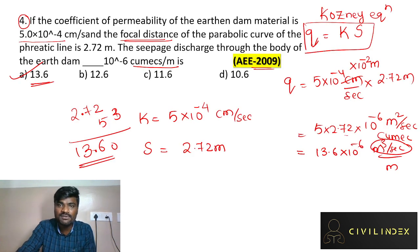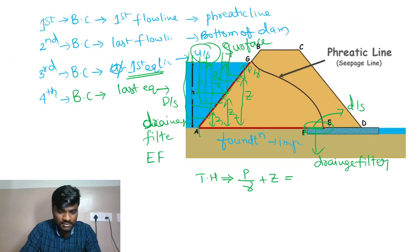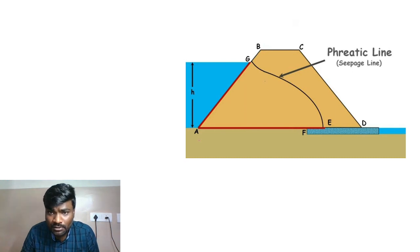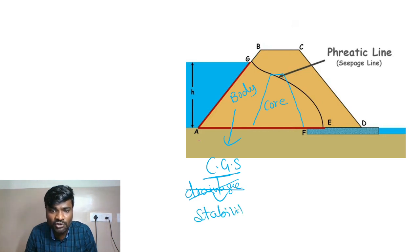This was the last question. We covered many previous questions including engineering services related. We also covered expected questions. Moreover, one more point: to arrest piping failure, we generally construct the dam body with different materials - core and body. The body is constructed with coarse grain soil because coarse grain soil has good drainage and stability. If the coarse grain soil is stronger, the body achieves core stability. The core is at the bottom, cut down through the center.